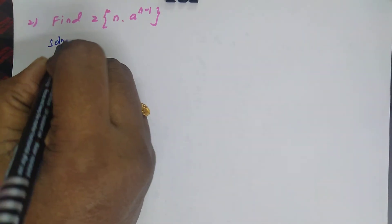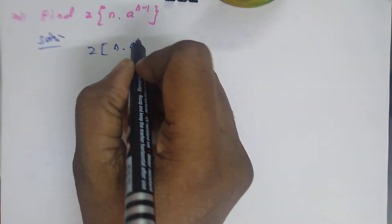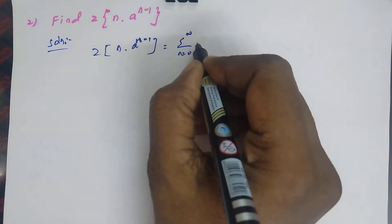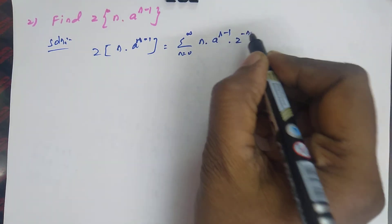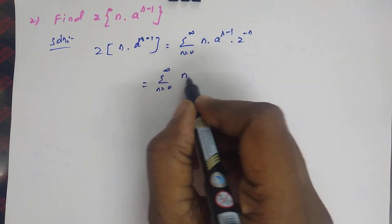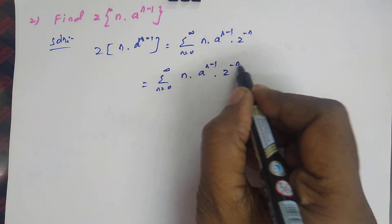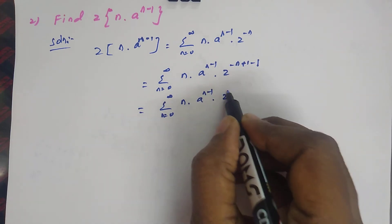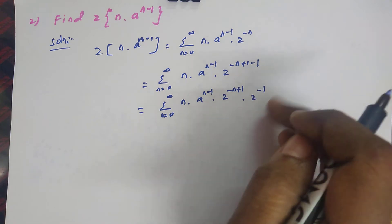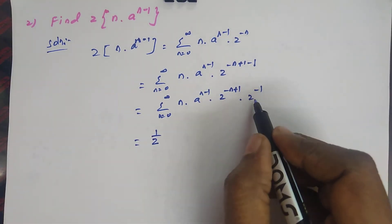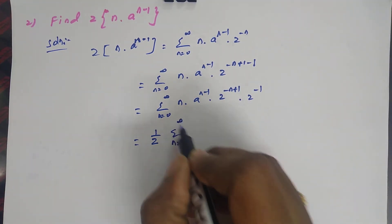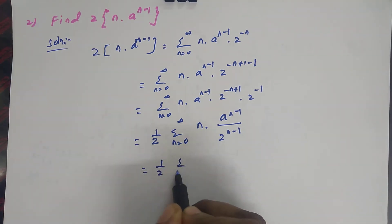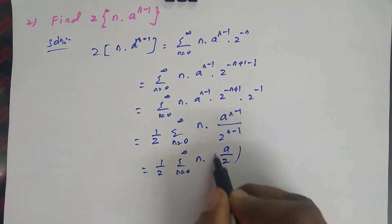By the same manner, Z of n into a power n minus 1 equals sigma n equal to 0 to infinity of n into a power n minus 1 into Z power minus n. For the Z power minus 1 factor, we can write it as 1/Z outside the sigma, giving 1/Z into sigma n equal to 0 to infinity of n into a/Z whole power n minus 1.